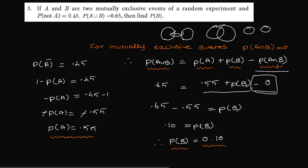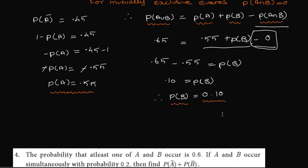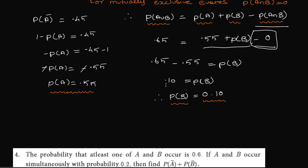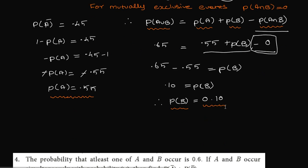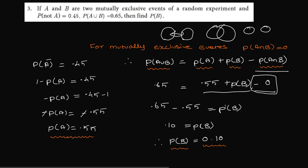So P(B), 0.65 minus 0.55 is 0.10. P(B) equals 0.10. Third question.